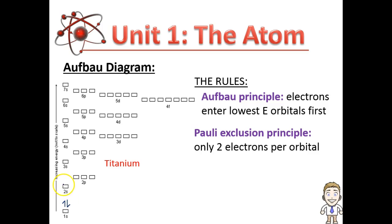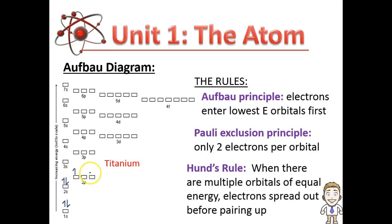So now my 1s is full. According to the Aufbau principle, we move up to the next lowest available energy level, which is the 2s, put in the two electrons, then we move to the 2p's, start putting electrons in.